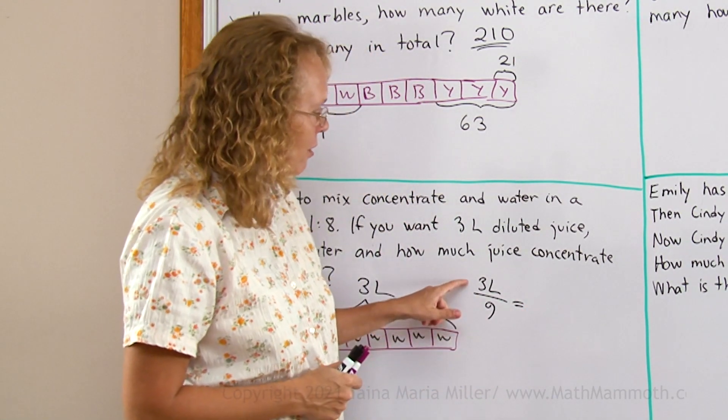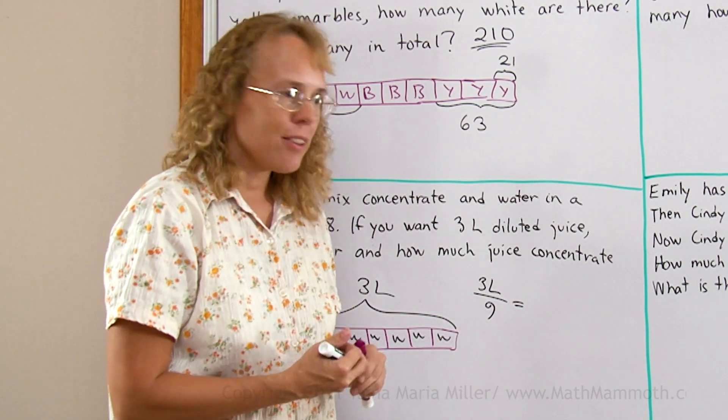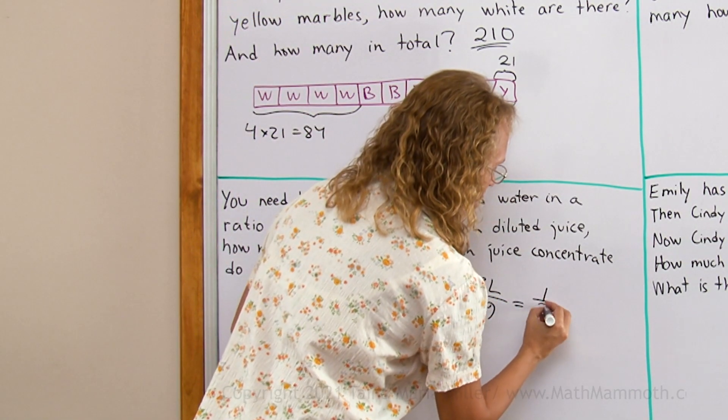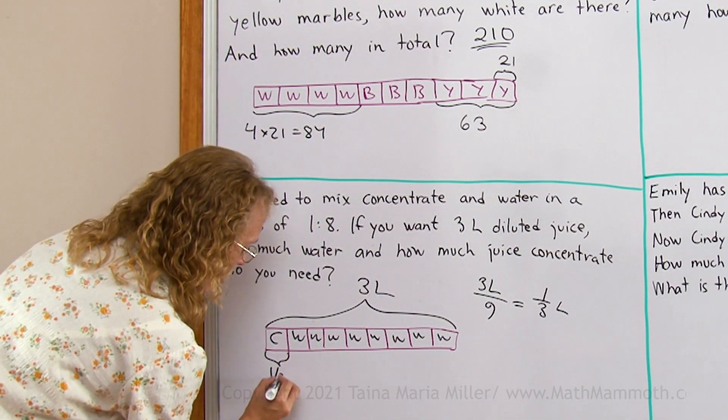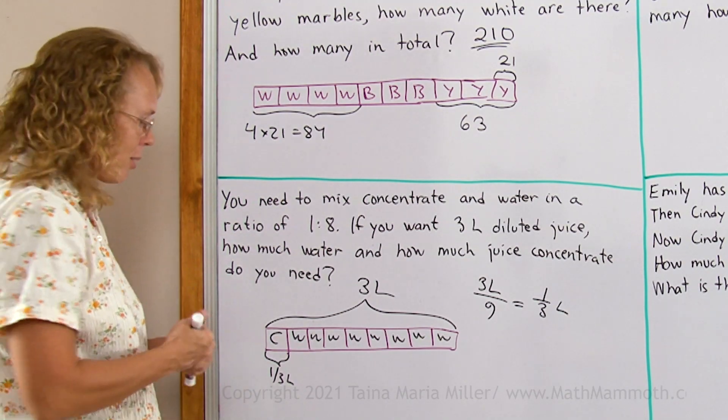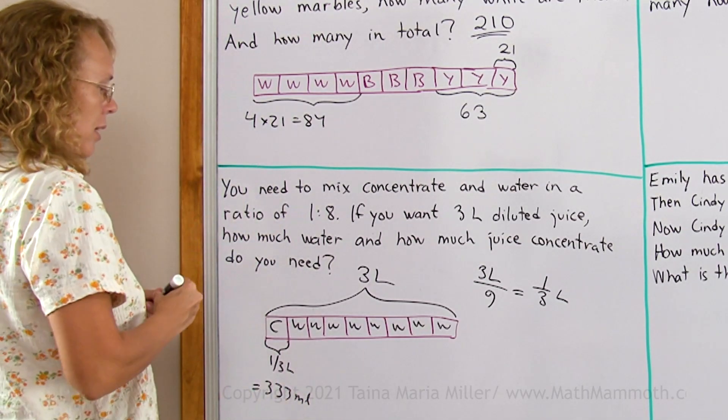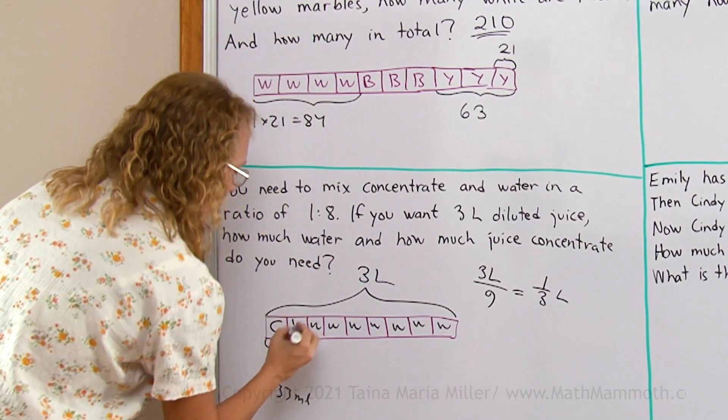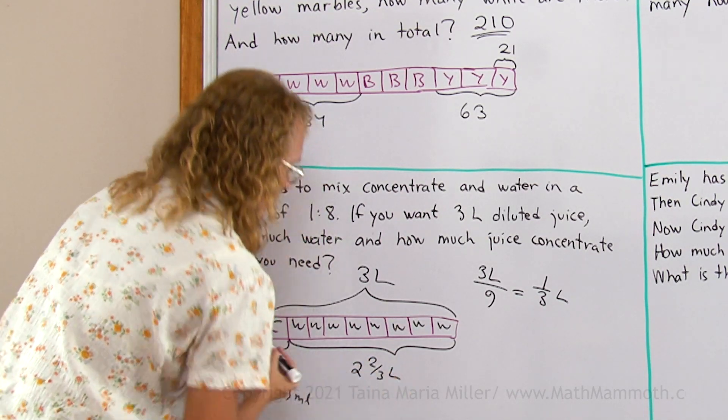And this is basically the division 3 divided by 9, which is the same as 1 third. It is 1 third of a liter. This here is 1 third of a liter. Or it would be 333 milliliters if you prefer. And the rest of it is water, which is then 2 and 2 thirds of liters.